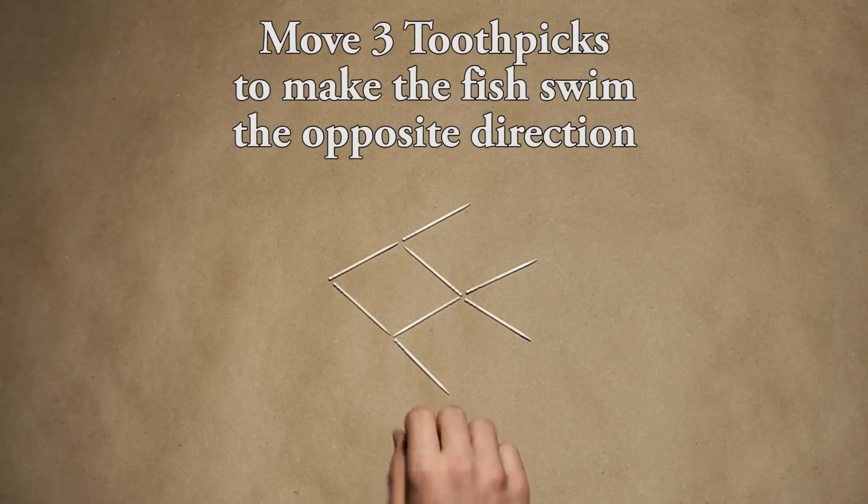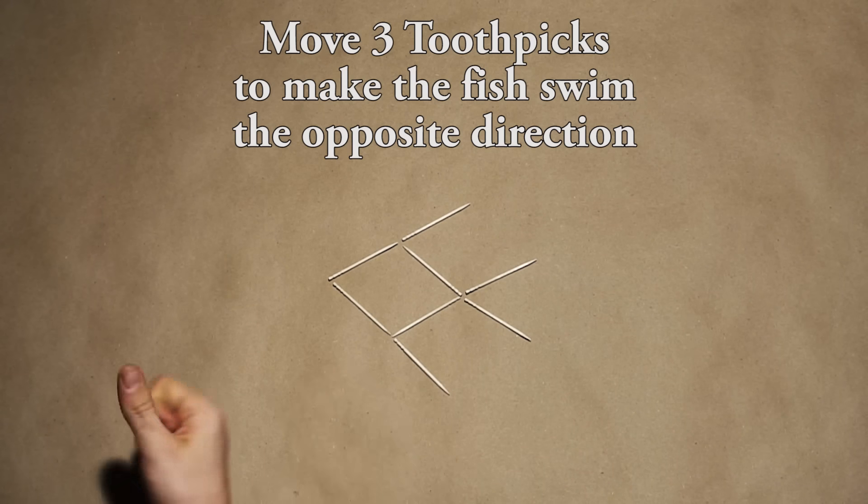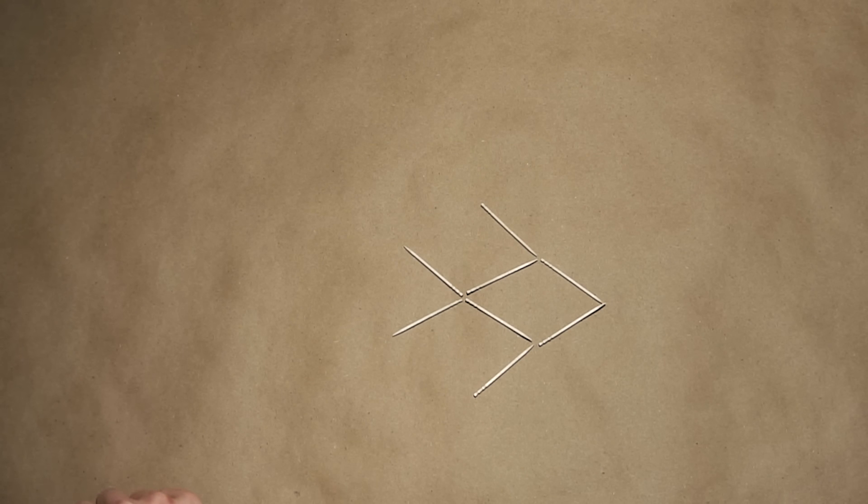Puzzle number one, the fish. So moving only three toothpicks, you got to make this fish that's swimming that way swim the opposite direction. If you want you can pause the video and I will have the answer at the end.